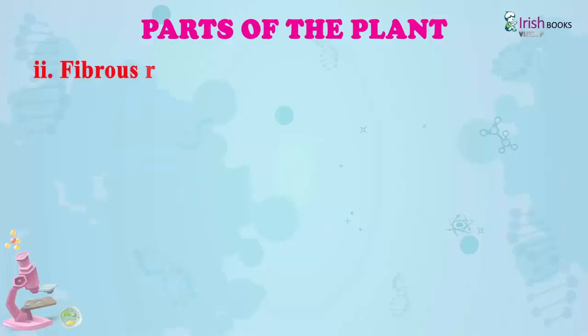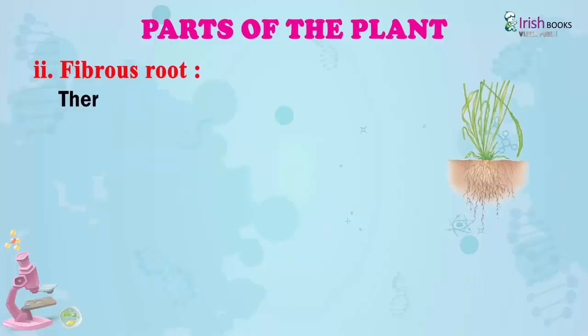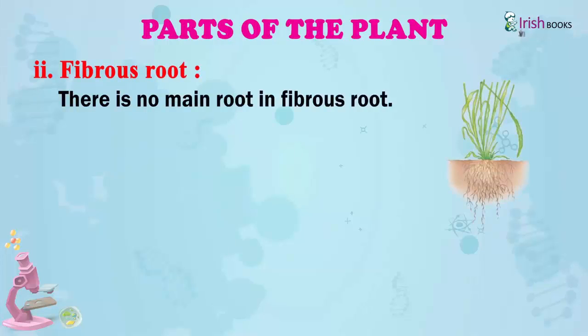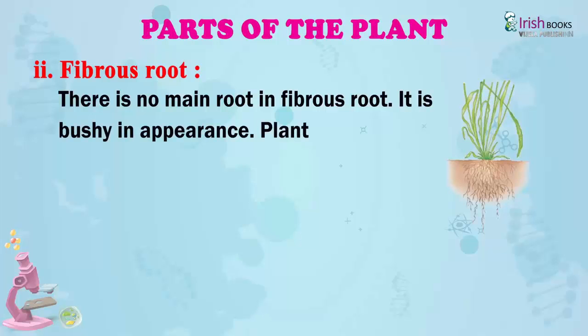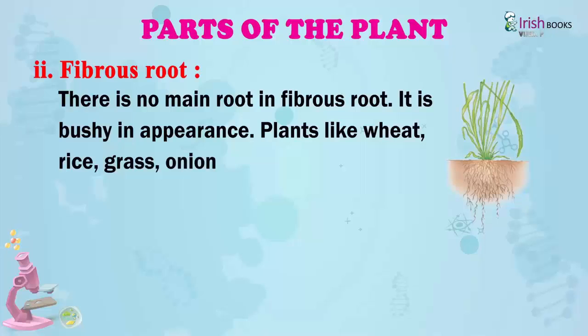Fibrous root. There is no main root in fibrous root. It is bushy in appearance. Plants like wheat, rice, grass, onion etc. have fibrous roots.